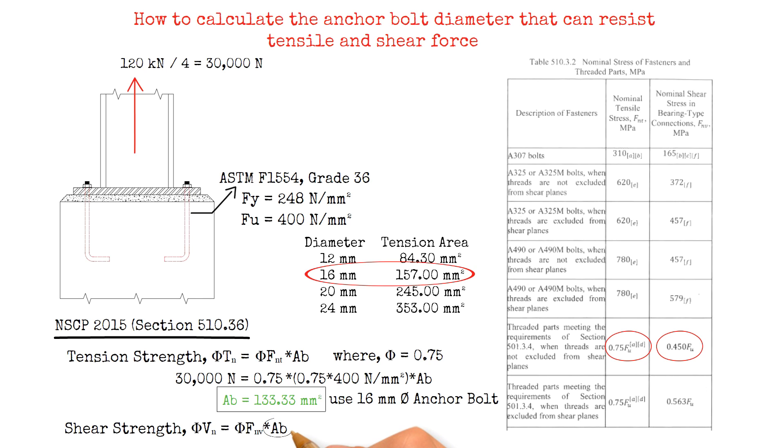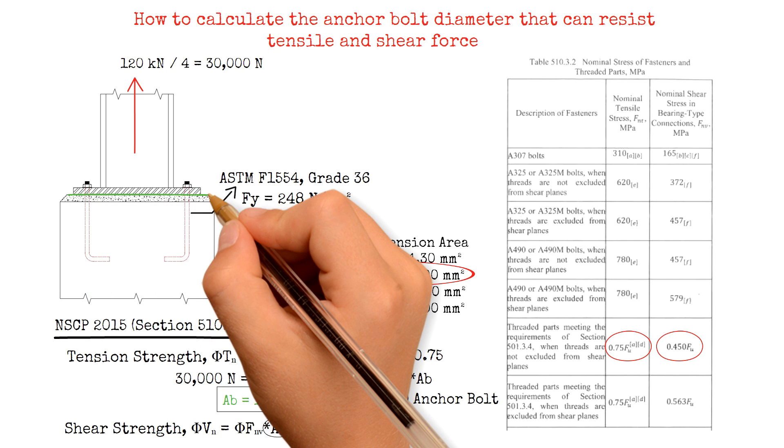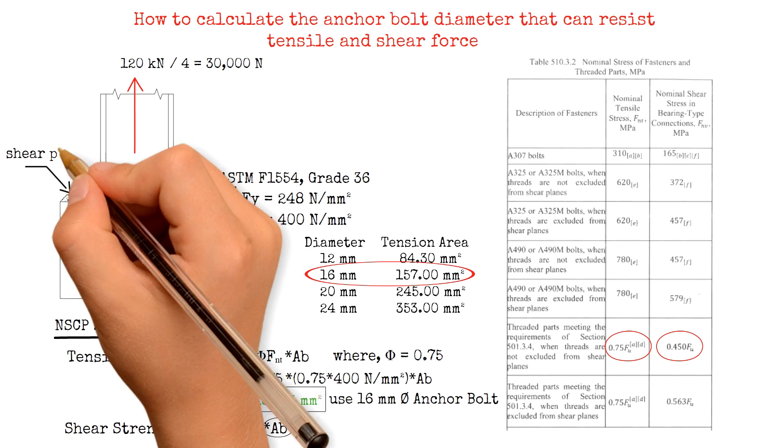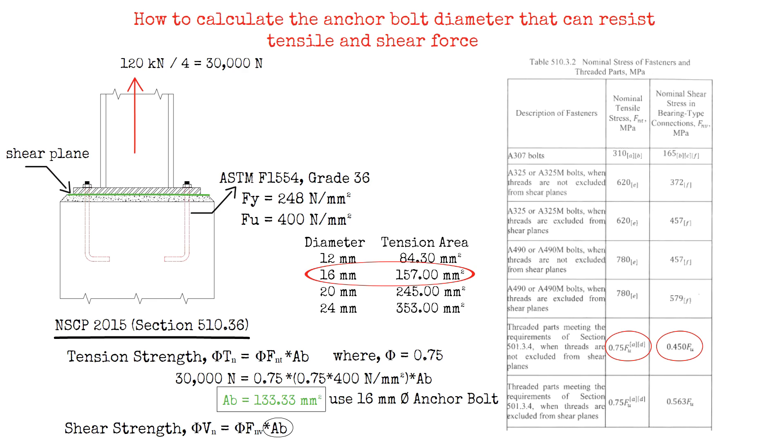And also take note that the nominal area of the bolt should be used if the shear plane passes through the unthreaded part of the bolt, otherwise use the tensile area of the bolt.